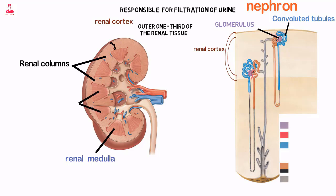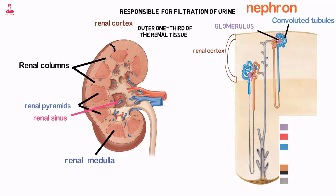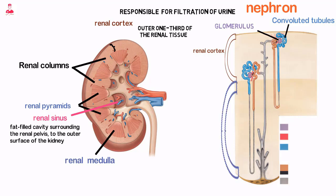The renal medulla consists of segments called renal pyramids that radiate from the renal sinus, the fat-filled cavity surrounding the renal pelvis, to the outer surface of the kidney. The striated appearing pyramids contain the loops of Henle and collecting tubules, and function as the beginning of the collecting system.